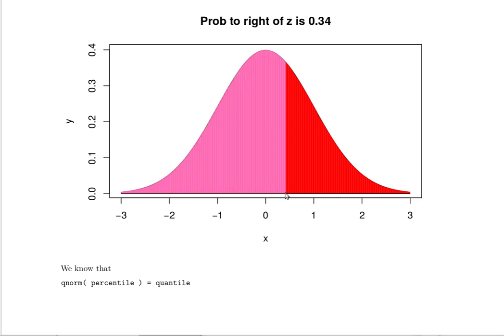If we know the probability to the right is 0.34, then the probability to the left will be 1 minus 0.34, because the total area under the curve is 1.